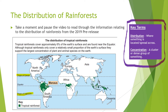You should hopefully also be able to see that rainforests are mainly found in the continents of South America, Africa, and parts of South East Asia. These are the locations where there is a suitably hot and wet climate for tropical rainforests to thrive.